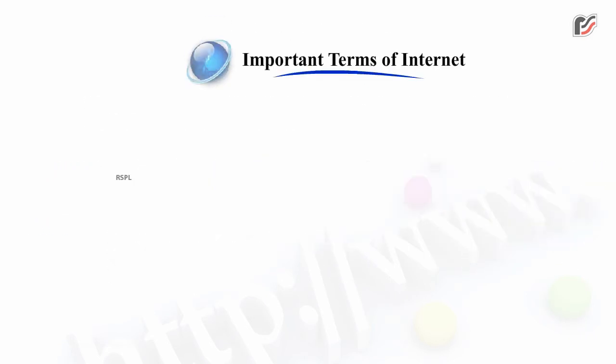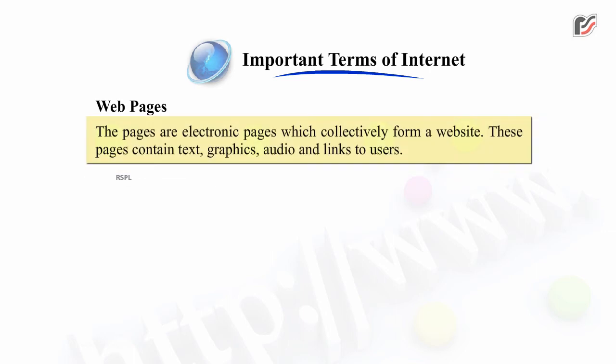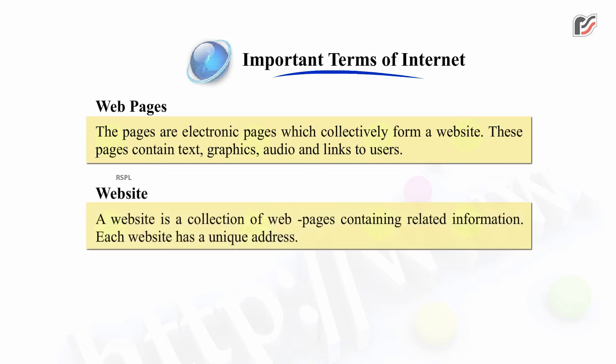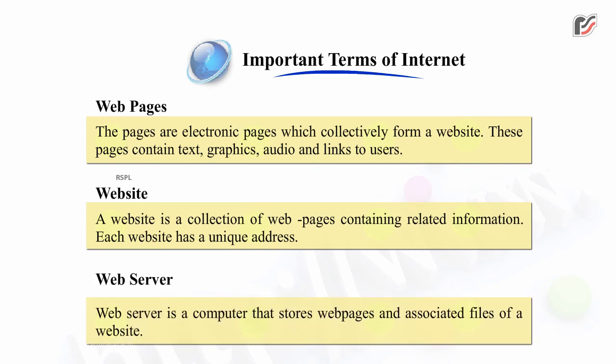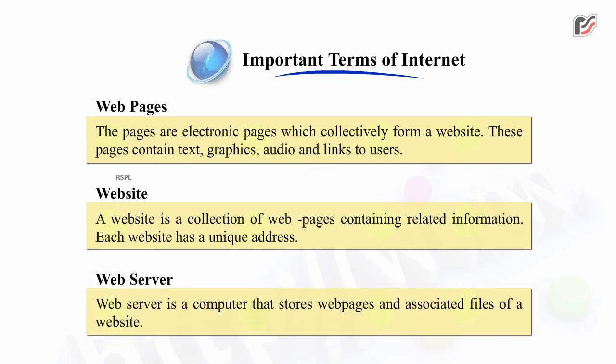Important terms of Internet. Web pages – these are electronic pages which collectively form a website. These pages contain text, graphics, audio, and links to users. Website – a website is a collection of web pages containing related information, and each website has a unique address. Web server – a web server is a computer that stores web pages and associated files of a website.